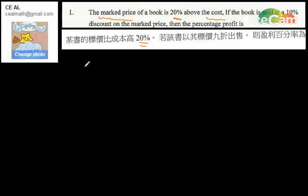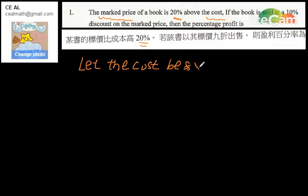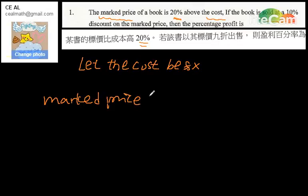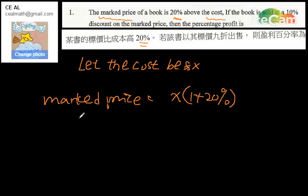Firstly, we need to let the cost be X dollars. We can see that the first sentence tells us the marked price is 20% more than the cost X. So here is the marked price.